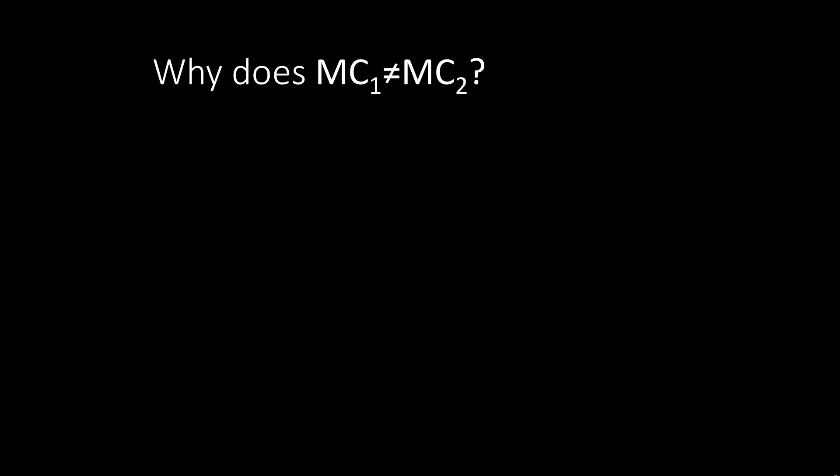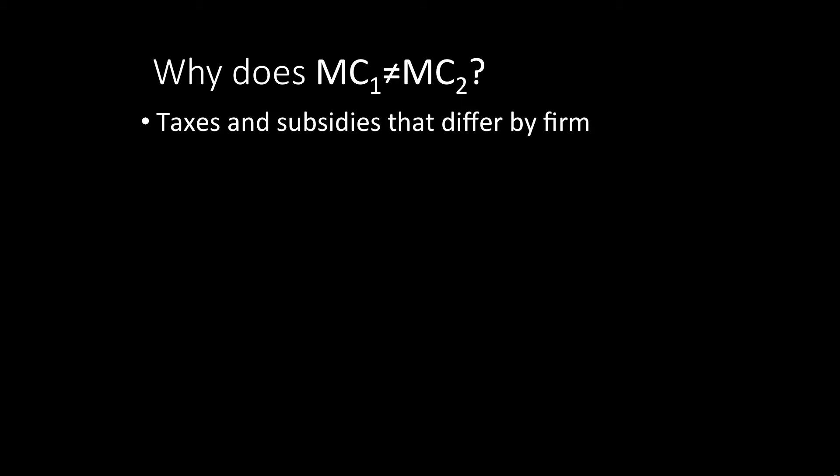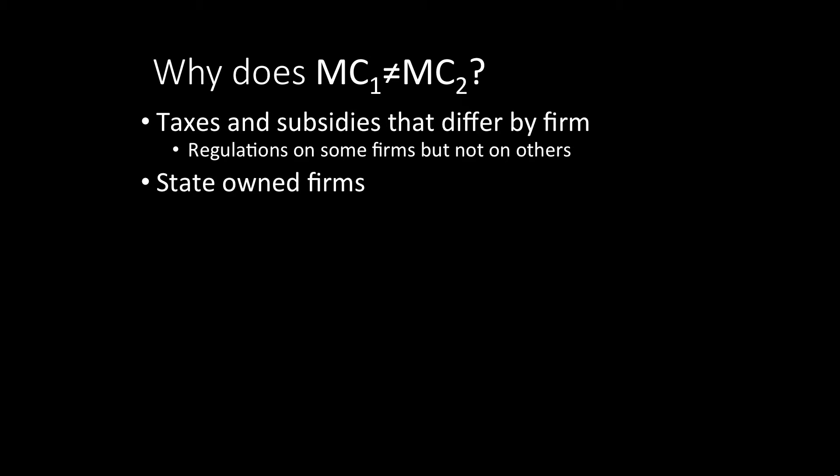So now we might ask: why are these marginal costs or marginal productivities not equalized? Taking the model literally, it's sort of like taxes and subsidies which vary by firm. But more generally, you can think about regulation impacting firms in different ways, perhaps because of cronyism. One may also think about state-owned firms — state-owned firms are often very big but not so productive, which reduces that covariance term. Or one could think about financial frictions: in many less developed countries, you have some very productive small firms, but they can't get a loan to get bigger. Small firms that don't grow big is a big problem in developing economies.